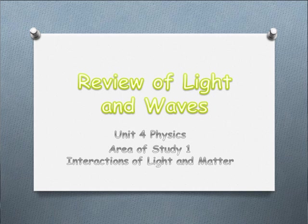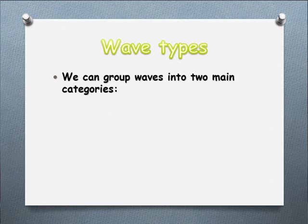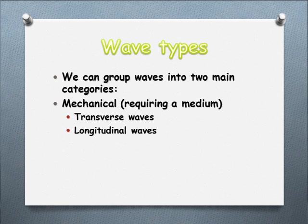Let's recall what we might have learnt in Unit 2 about different types of waves. We have two main categories. Firstly, there are mechanical waves — those are the ones that require a medium. You've got a transverse wave, kind of like a Mexican wave, where the particles move perpendicular to the direction it travels. And we've got longitudinal waves, such as sound waves.